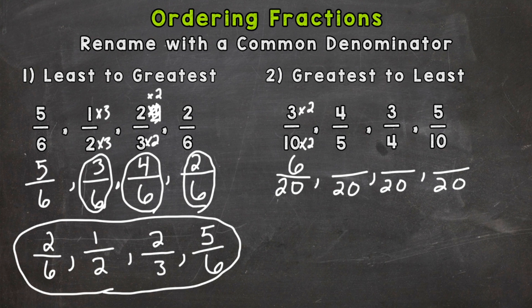All right. Next, I know 5 times 4 is 20. So I need to do the same thing to the top. 4 times 4 is 16. Next, I know 4 times 5 will give me that denominator of 20. So I need to do the same thing to the top. 3 times 5 is 15.